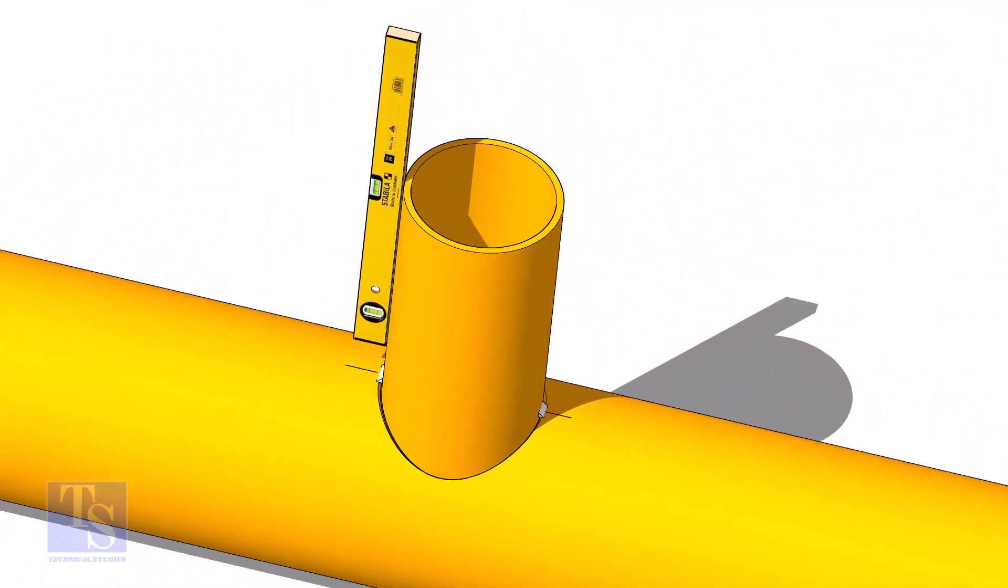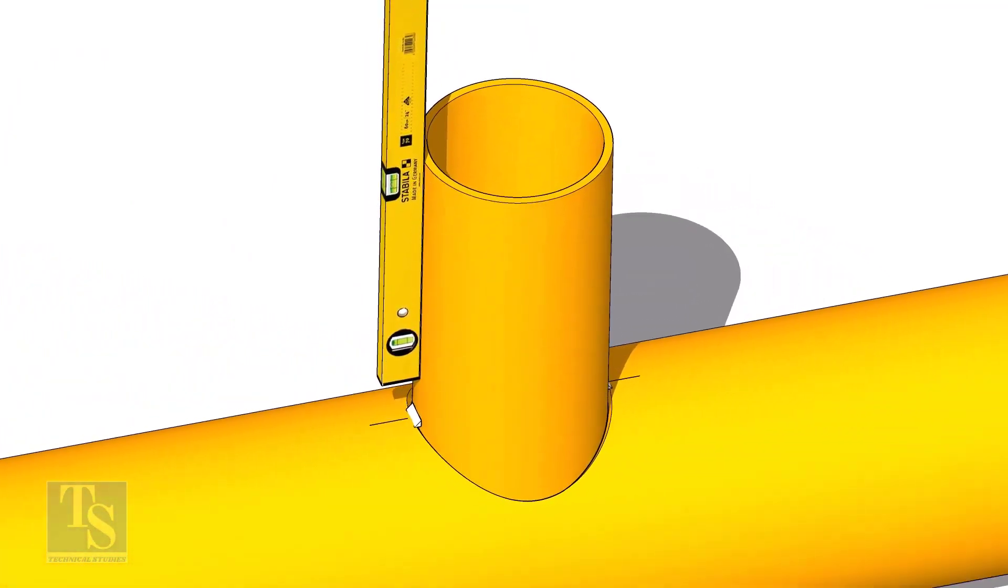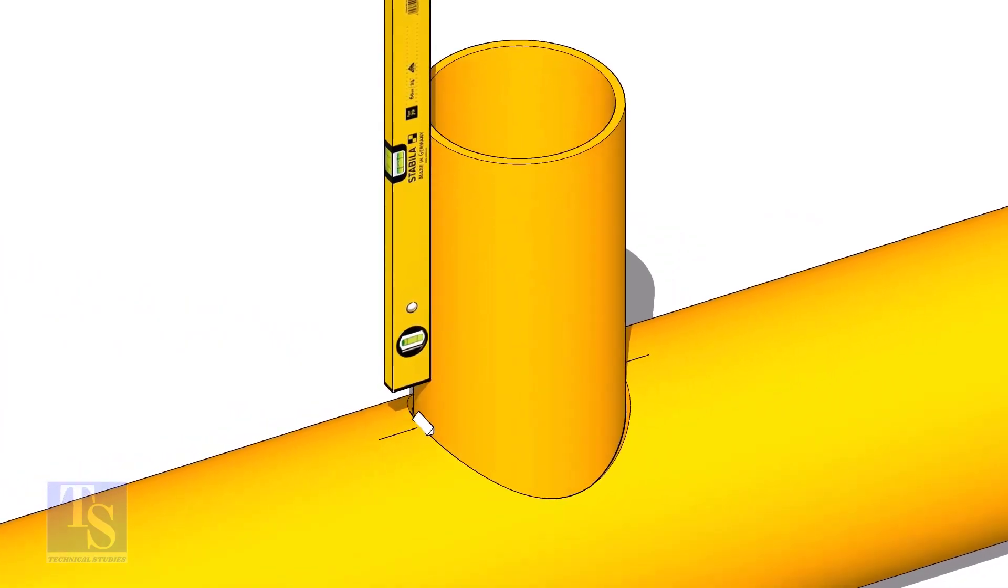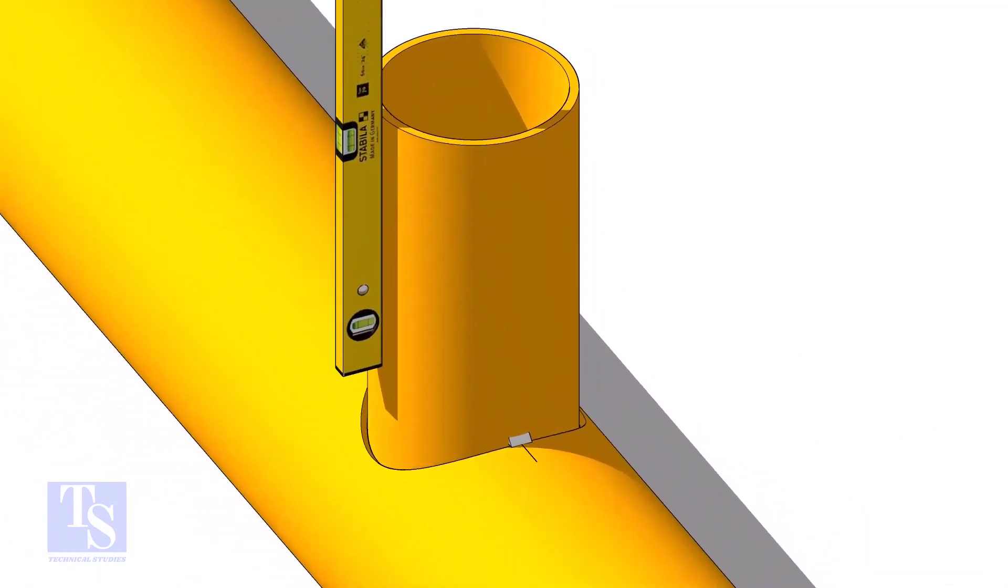Tack weld at one side and check the level of the branch. If the level is correct, tack weld on the other side. Make level of the other face of the branch and tack weld on both sides.